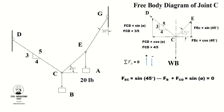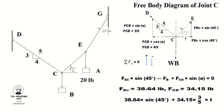Setting the algebraic summation of all forces equal to zero, substituting the values of FEC and FCD into the equation and separating B, we find that the unknown weight B is equal to 47.8 pounds.